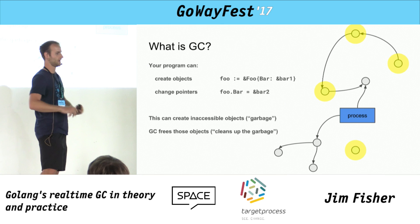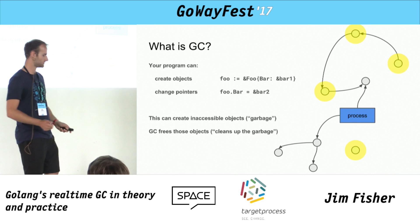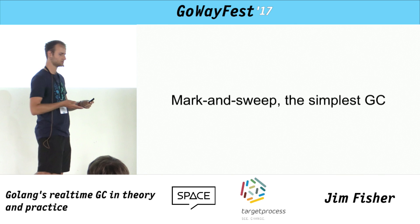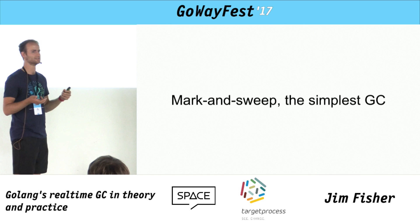There are lots of ways to do garbage collection. I'm going to show one way called mark and sweep — it's the simplest and most classic algorithm. I'll also explain it because it's the precursor to understanding how Go does garbage collection.